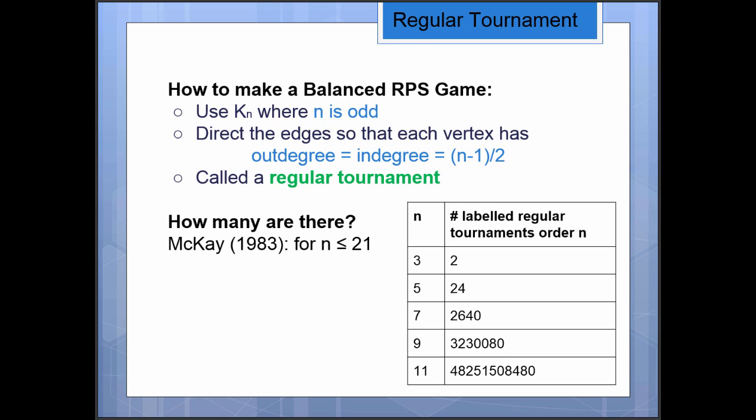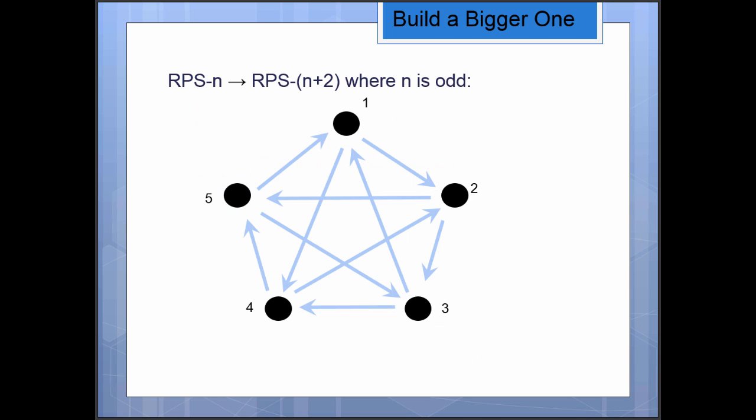If we already have one of size five, how can we build one really easily of size seven? In general, this works to take a Rock Paper Scissors type game on n vertices, where n is odd, and build up one on n+2 vertices. Here I've taken the exact graph that we had for Rock Paper Scissors Lizard Spock, but instead of those labels I've just labeled the vertices one, two, three, four, five. We're going to figure out how to add in a new vertex and then another new vertex to build a bigger graph that has the same properties. Right now everything has indegree two and outdegree two. What we do is we add in a new vertex, so I've called this vertex number six, but in general it's going to be called the vertex number n+1. Vertex n+1 beats all of the odd vertices that are already there.